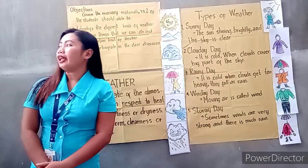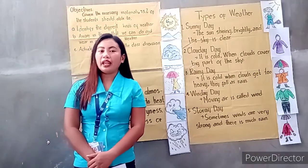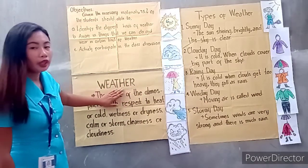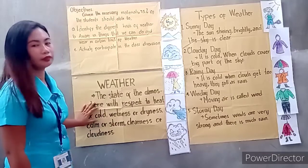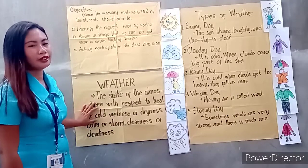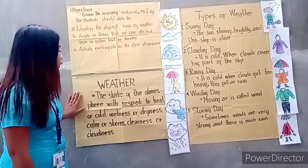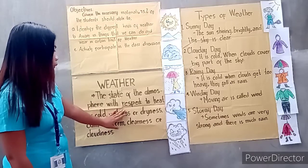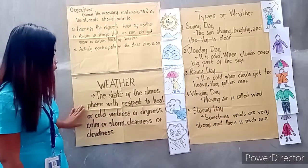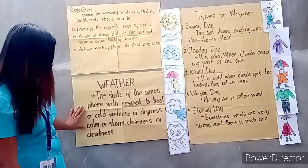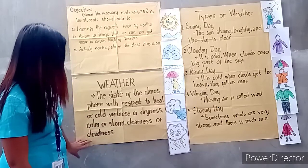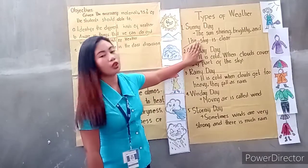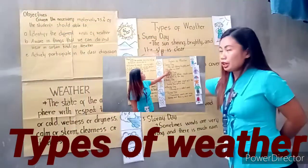Correct! Today is a sunny day. So here is weather. So who can read for me the definition of weather? Okay, thank you so much, Alan. So weather is the state of the atmosphere with respect to heat or cold, wetness or dryness, calm or storm, clearness or cloudiness.